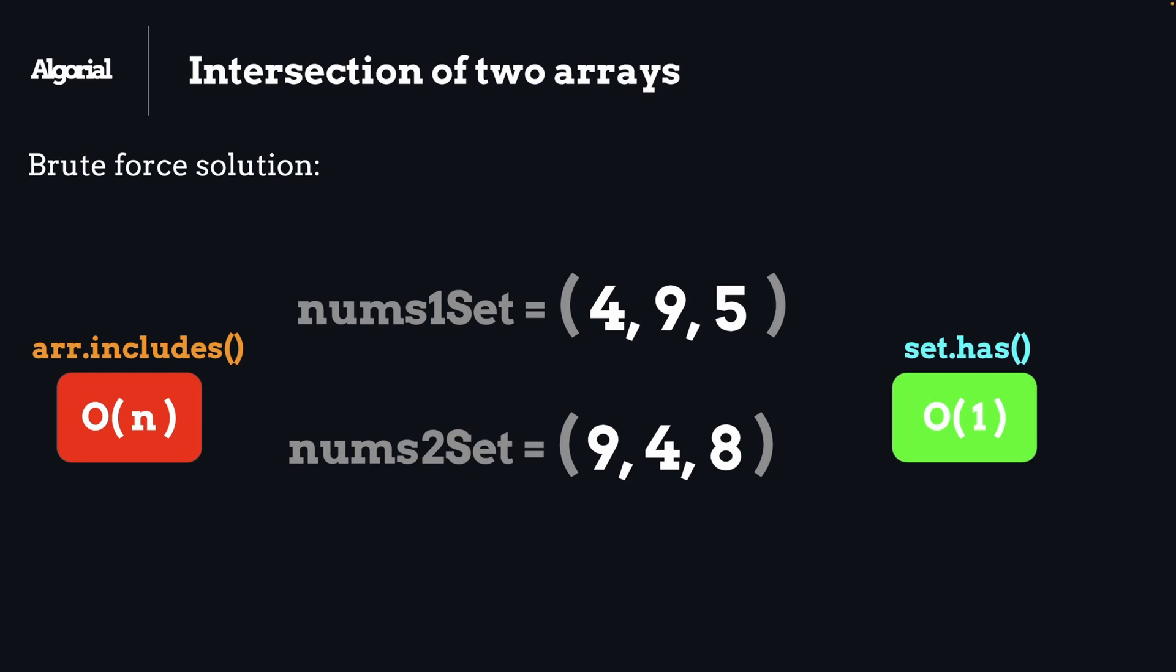That is one advantage of using set instead of array, but for that our sets will require some space. If we have each array as a set instead, we can iterate over one and look for each value of it in the other set. But the point is this time it will be constant lookup, not linear.